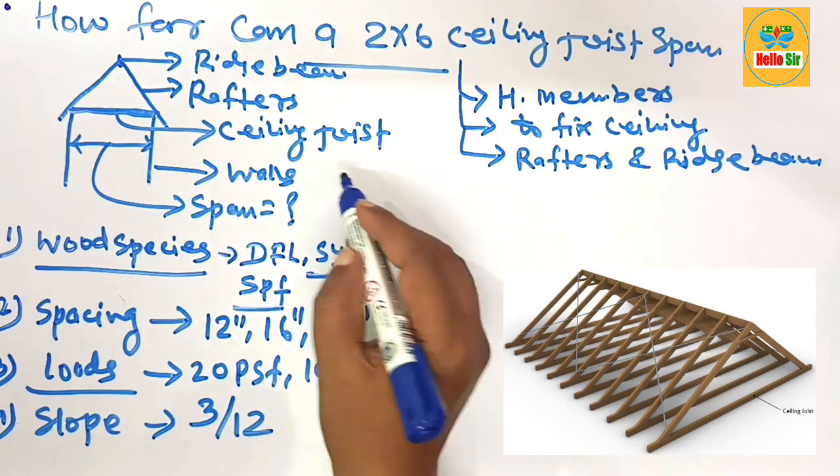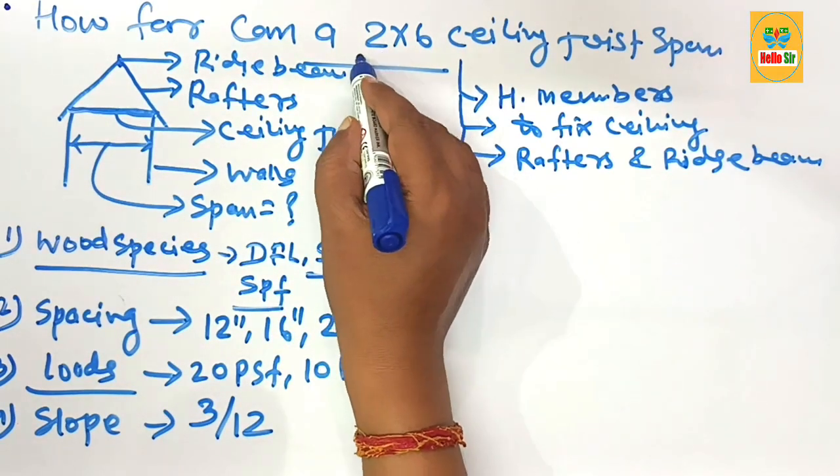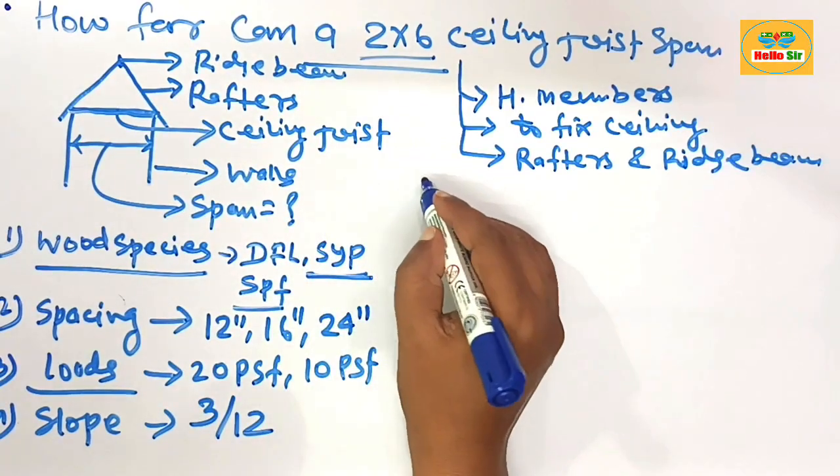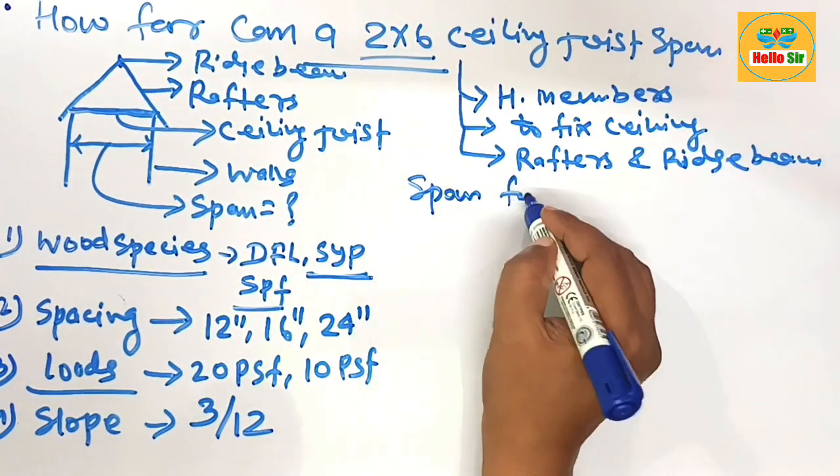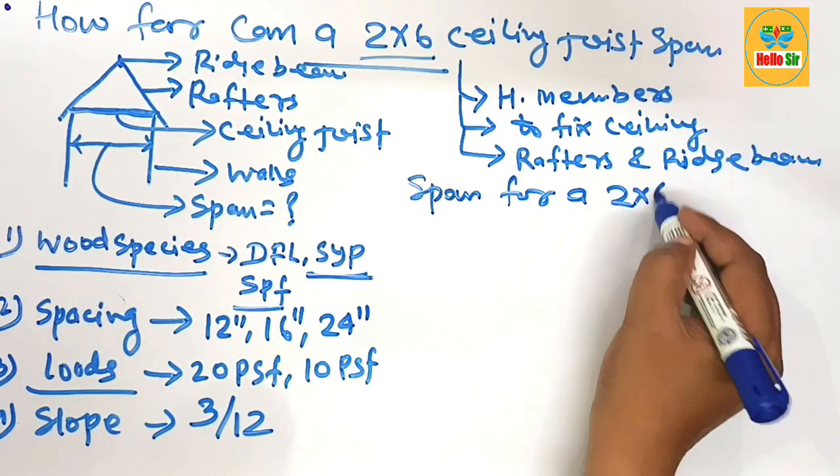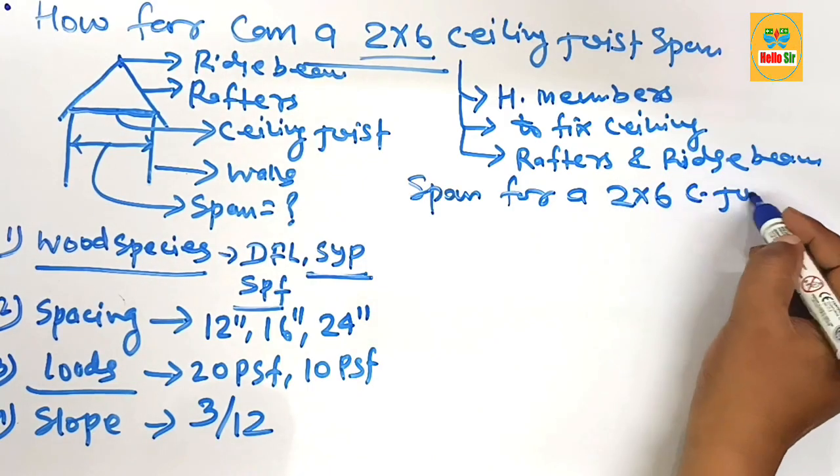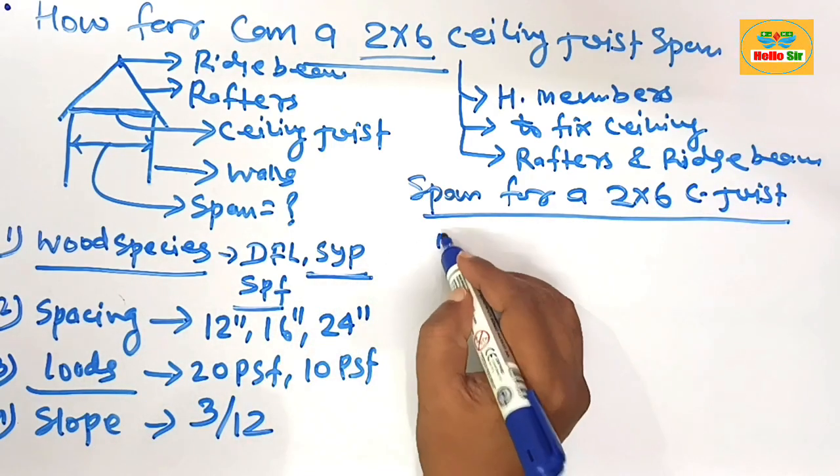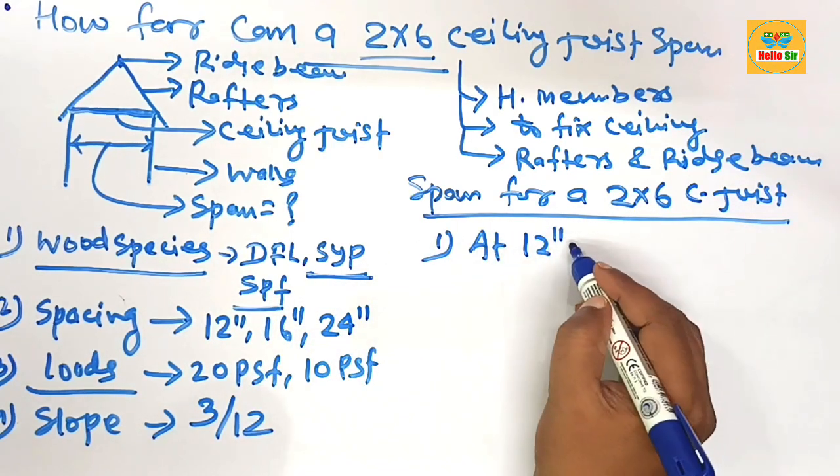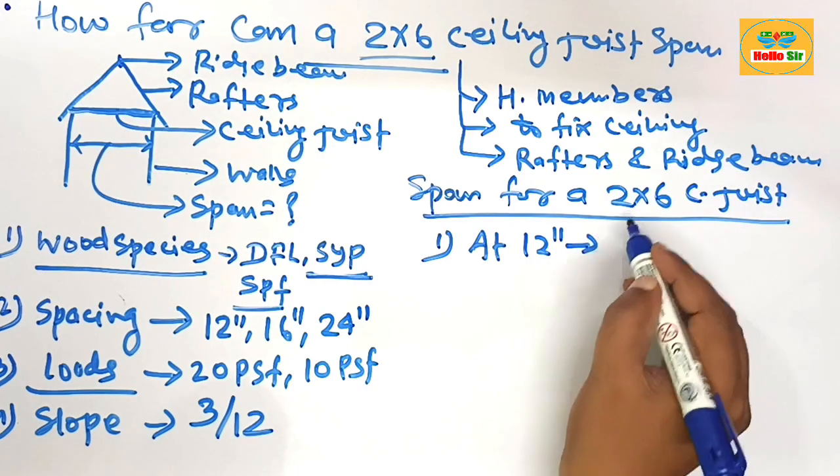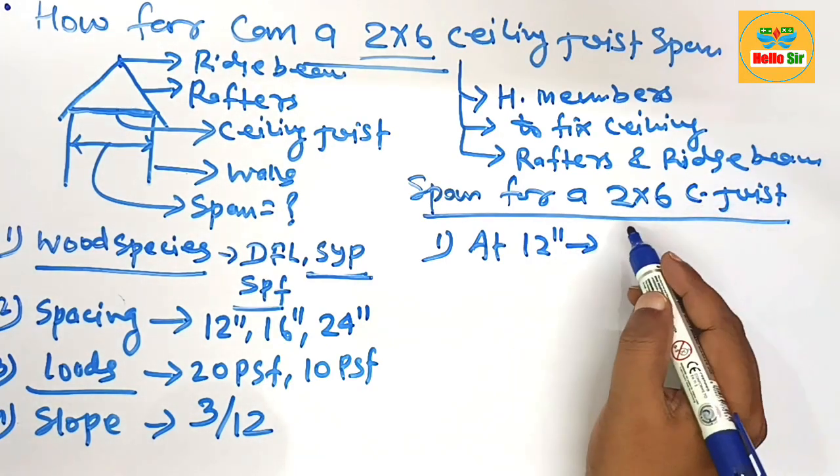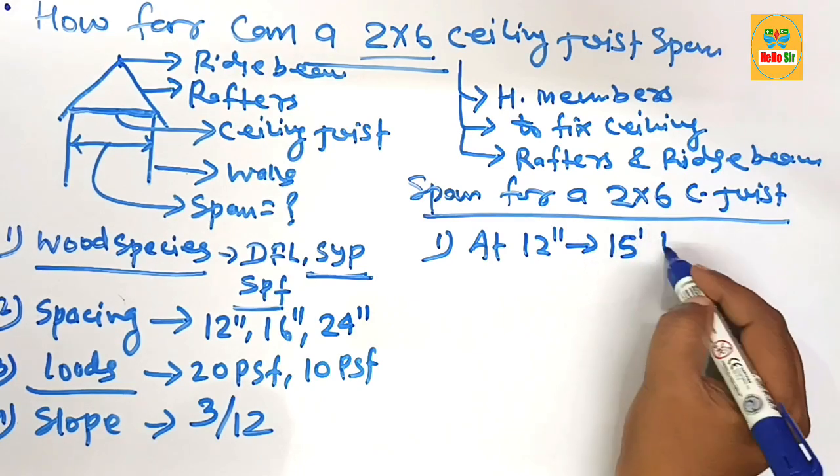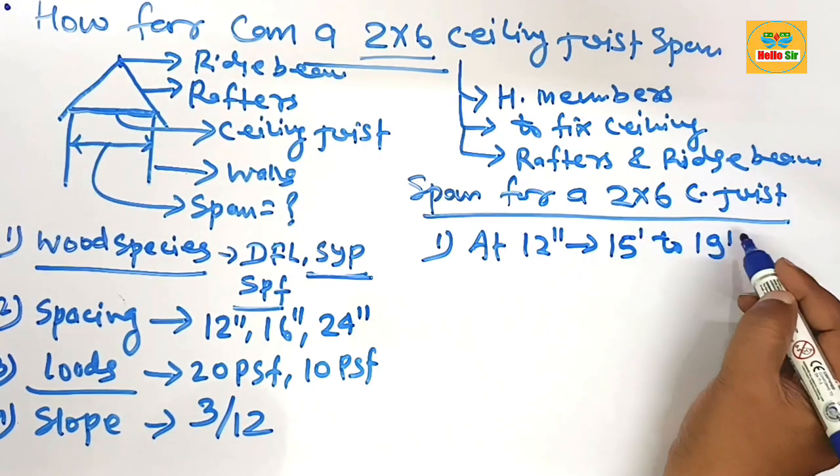Now find the maximum span for a 2 by 6 ceiling joist. The span for a 2 by 6 ceiling joist at different spacing: suppose first at 12 inches on center spacing, a 2 by 6 ceiling joist can span from 15 feet to 15 feet. Remember this one.